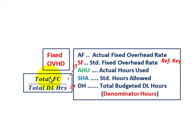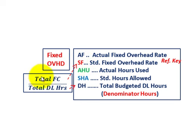The difference between actual and standard rates: for our actual fixed rate, we take total fixed cost for the period and divide by total actual direct labor hours used. Our standard fixed overhead rate is the total predetermined fixed cost divided by total predetermined direct labor hours based on our standard.